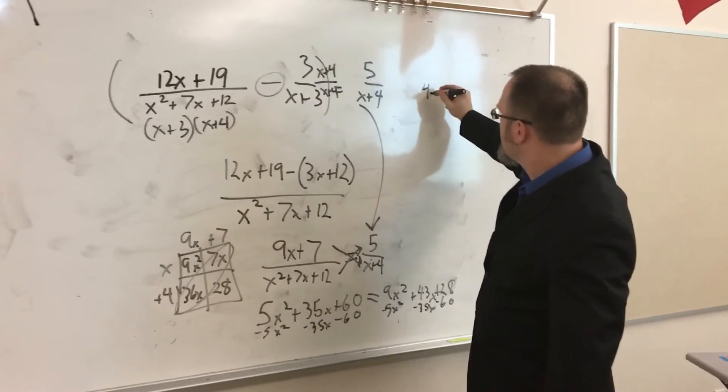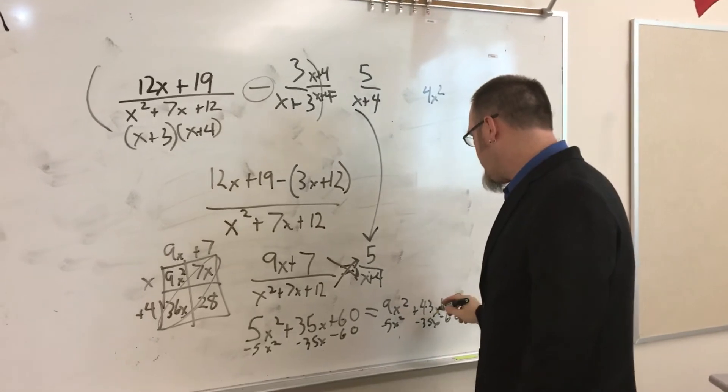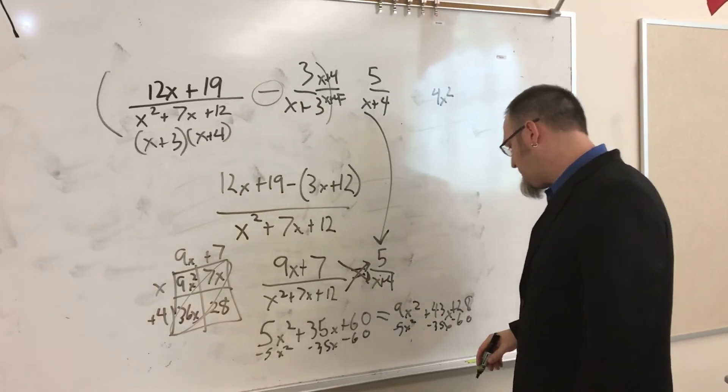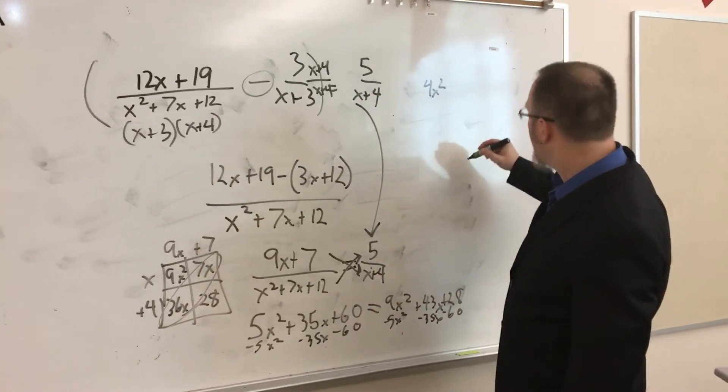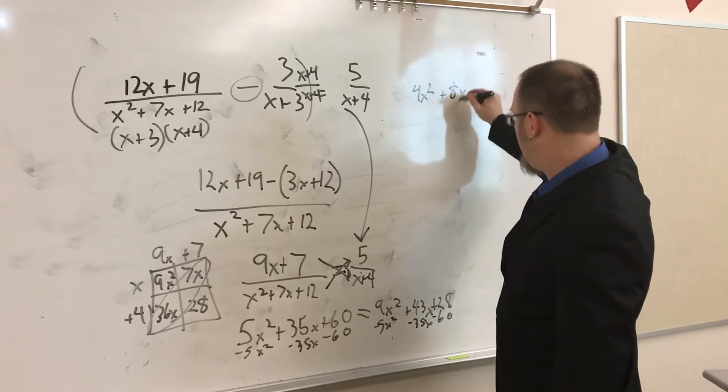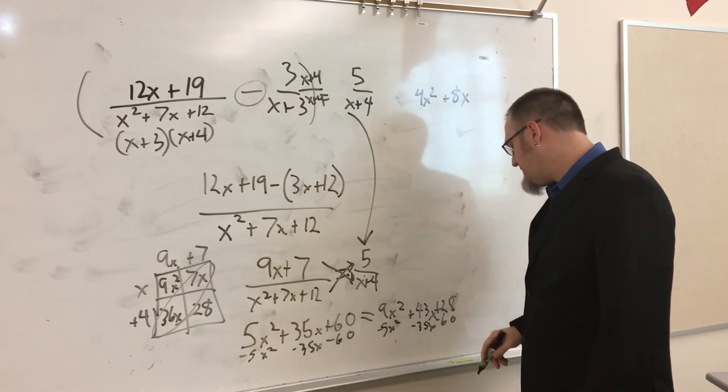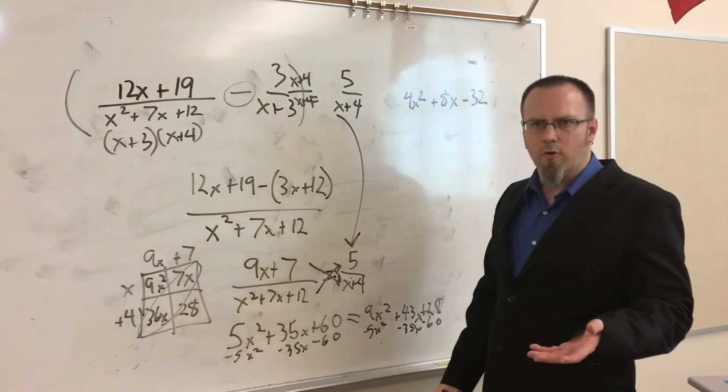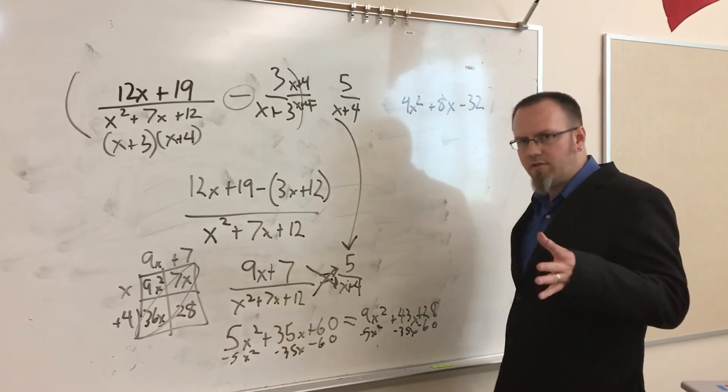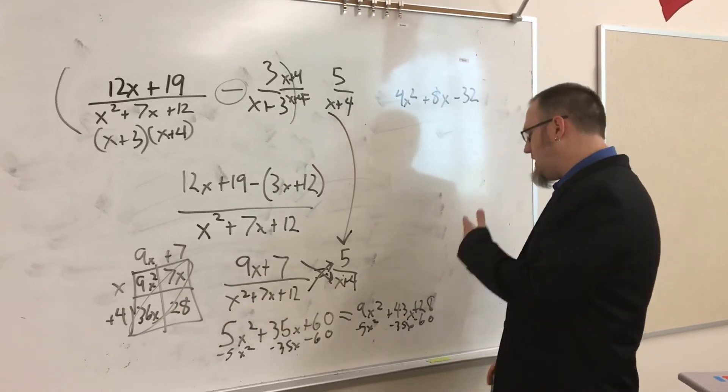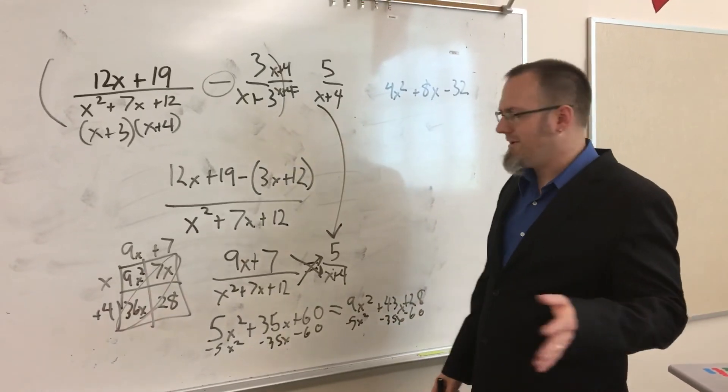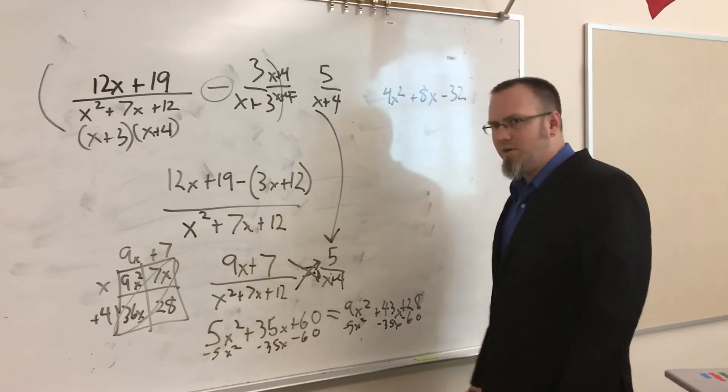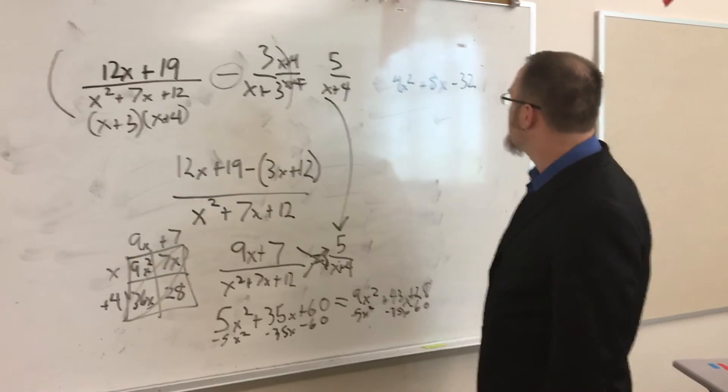9x² minus 5x² is 4x². 43x minus 35x is going to give me a positive 8x. And then 28 minus 60 is going to give me a negative 32. Now, I did work this with a group in 7th period, and I was just like, oh yeah, it's 42. That's not 42. That's 32, which led to the problems that we had getting the answer for that one.